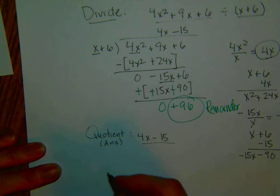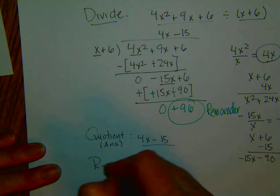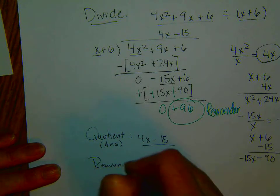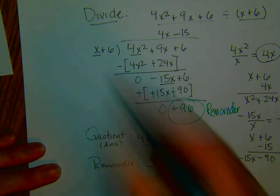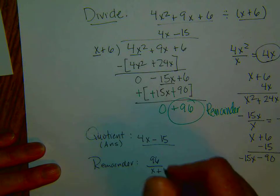The remainder is 96. Sometimes it's written over the divisor, so that's 96 over x plus 6.